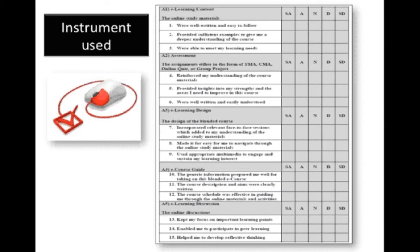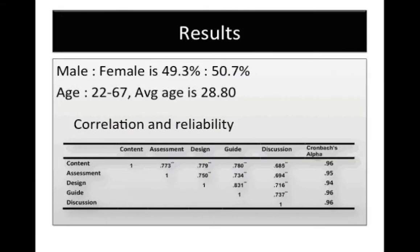Here is a sample of the instrument used for data analysis. Students provided feedback online. The five hypothesized factors were measured by three questions each. The demographics of the student population are as follows: male to female ratio was about 50/50, and the average age of the student population was 29.